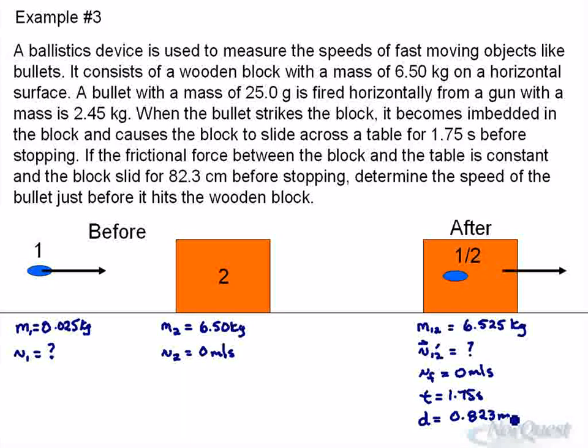Because we're not using momentum formulas, we have to go to proper standard units, so 0.823 meters. What we want to find out is how fast it was initially moving together. Once we know that, we can go back to conservation of momentum and find out how fast the bullet was moving.